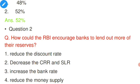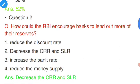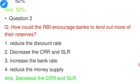Question number two: How could the RBI encourage banks to lend out more of their reserves? Options: reduce the discount rate; decrease the CRR and SLR (Cash Reserve Ratio and Statutory Liquidity Ratio); increase the bank rate and reduce the supply. The answer is decrease the CRR and SLR. When CRR and SLR are decreased, lending capacity of banks increases, which lowers interest rates and encourages investment.